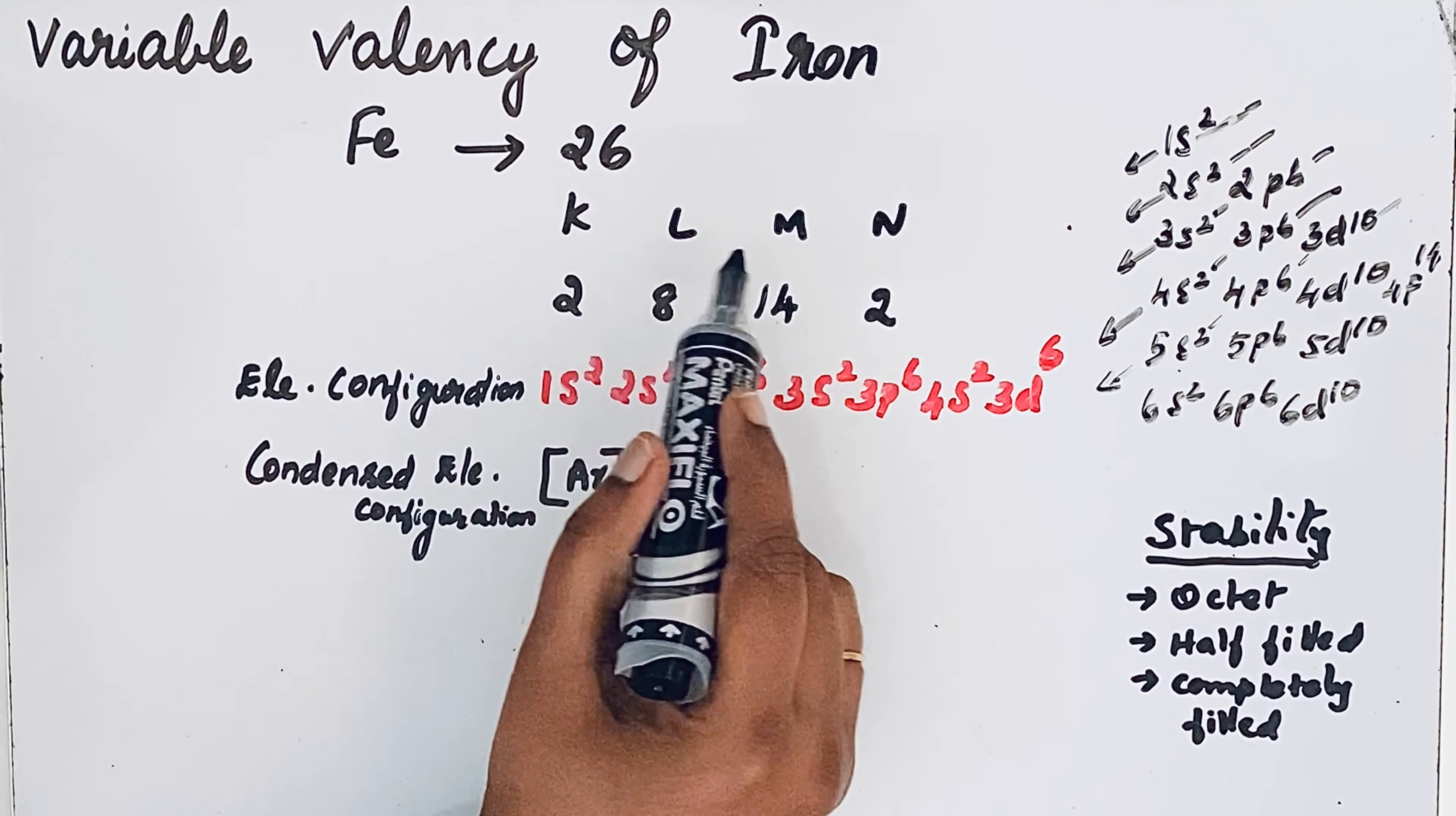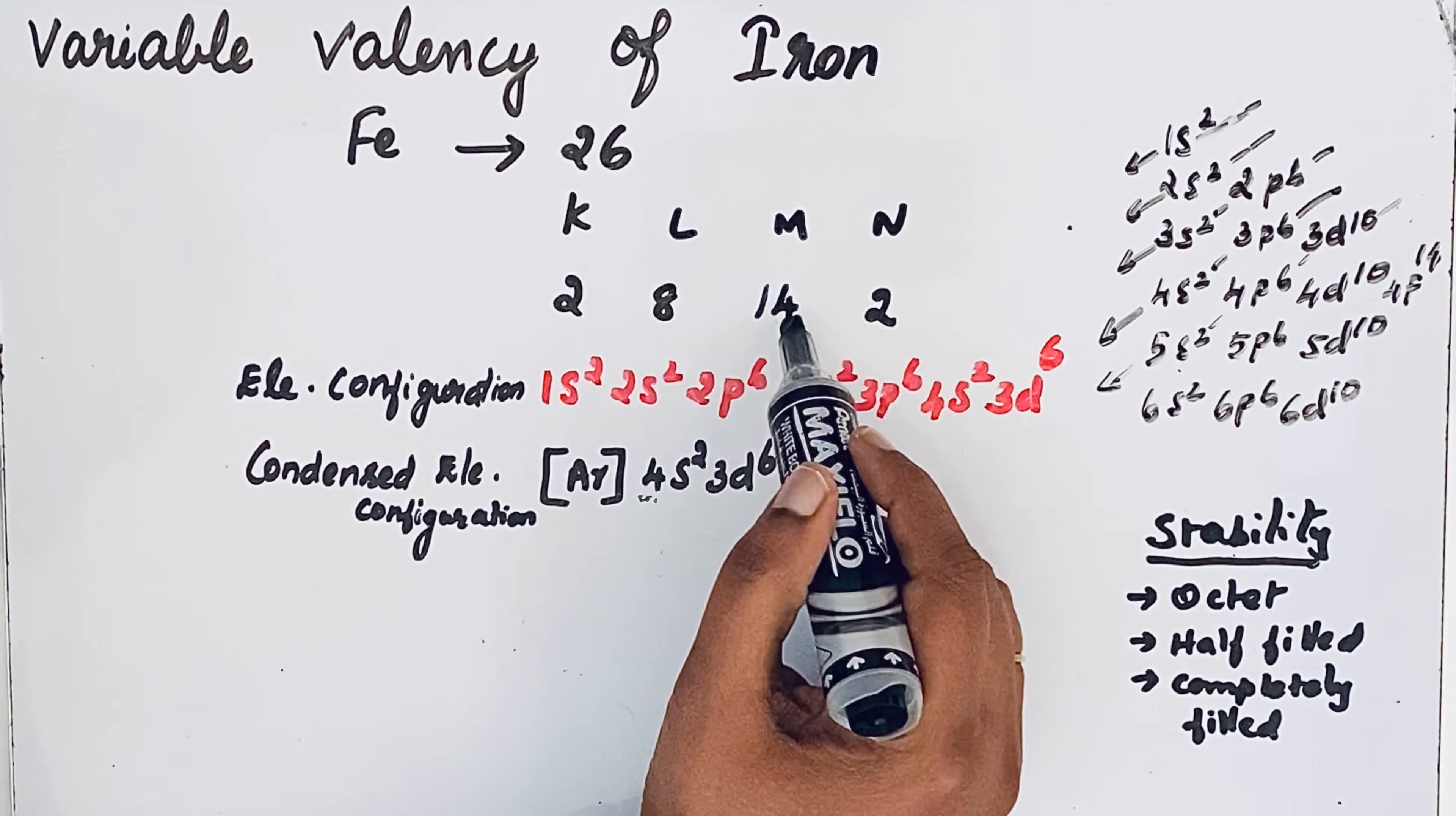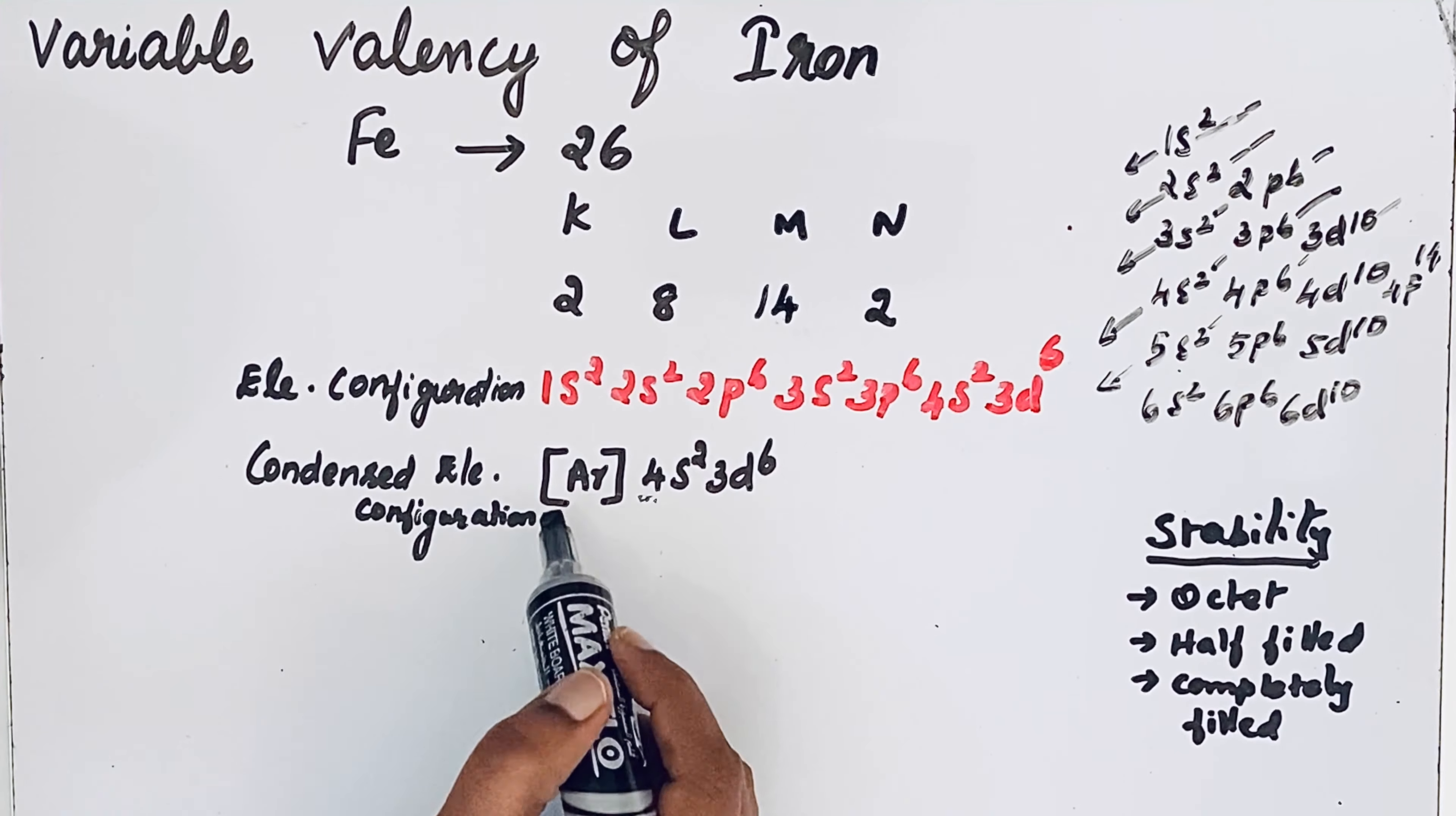This is KLMN shell. If you look at SPDF notations, after filling the 4s orbital then only we can fill the 3d orbitals. That is why two electrons enter into the N shell before completing the third shell. Electronic configuration: 1s2, 2s2, 2p6, 3s2, 3p6, 4s2, 3d6. This is the condensed electronic configuration.